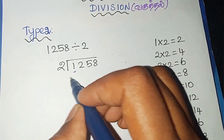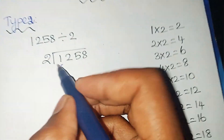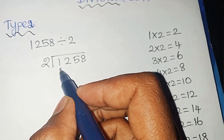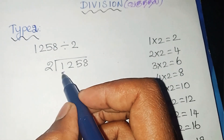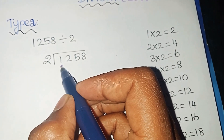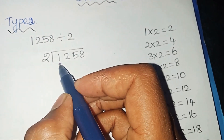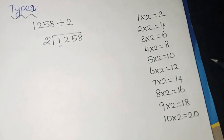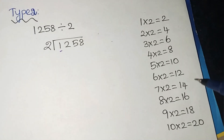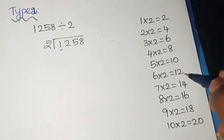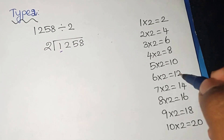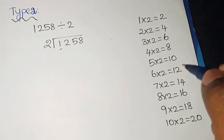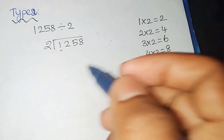We will divide 1258 by 2. First, you have to see the first digit. For your easy understanding, I wrote the second table here. But you should memorize all the tables. If you memorize all the tables, the division sum is very easy.